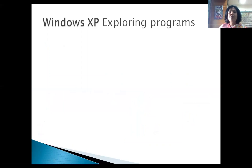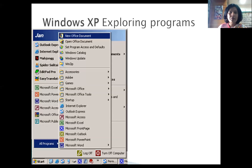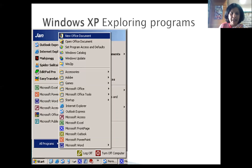Now we will open Windows XP programs. What is in our computer? When we live in our house, we should know what is in each room. To explore Windows XP, there have been different user names — Administrator, Sam, Jan. These names can be changed, which I will demonstrate using system tools. To get started, click on the Start button and you will see All Programs.